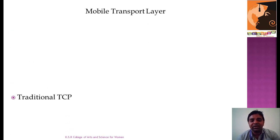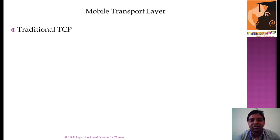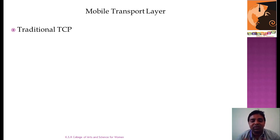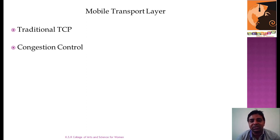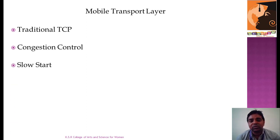To talk about the mobile transport layer, we will be discussing traditional TCP. The transport layer is responsible for two types of communication: one is wired medium and one is wireless medium. For wired medium we have TCP, and for wireless we have UDP. We will be talking about congestion control — when a large number of packets have to be transmitted from one place to another, congestion occurs, and how the transport layer controls these conditions.